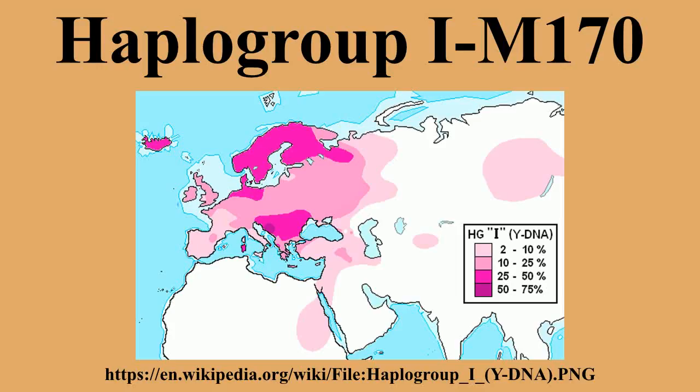Haplogroup I2A1B-M423 is the most frequent Y-chromosome Haplogroup I-M170 in Central and Eastern European populations, reaching its peak in the Western Balkans, most notably in Dalmatia and Bosnia-Herzegovina. A greater variance of this group has been found in Ireland and Great Britain, but the overall frequency is very low. Haplogroup I2A1B-M423 is virtually absent in Fennoscandia, Western and Southwestern Europe.